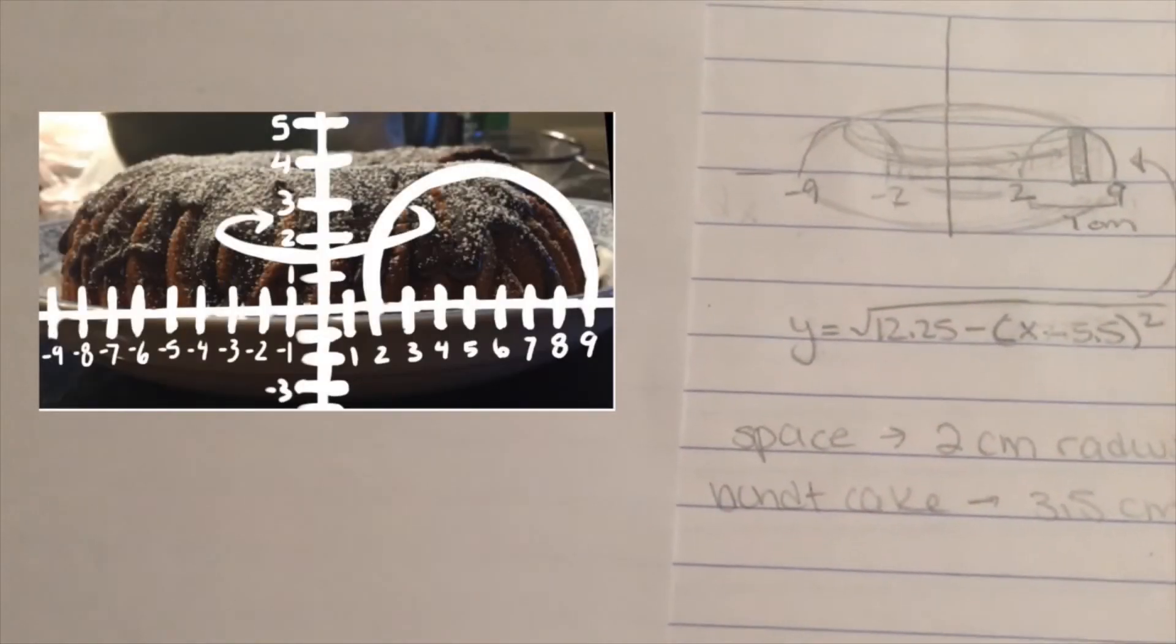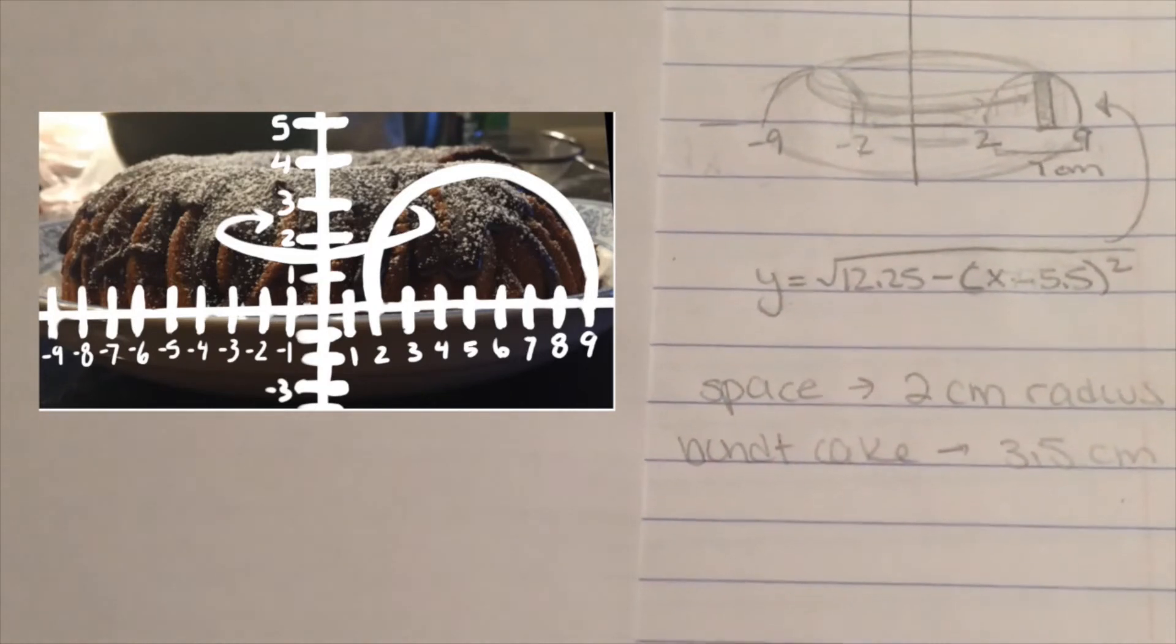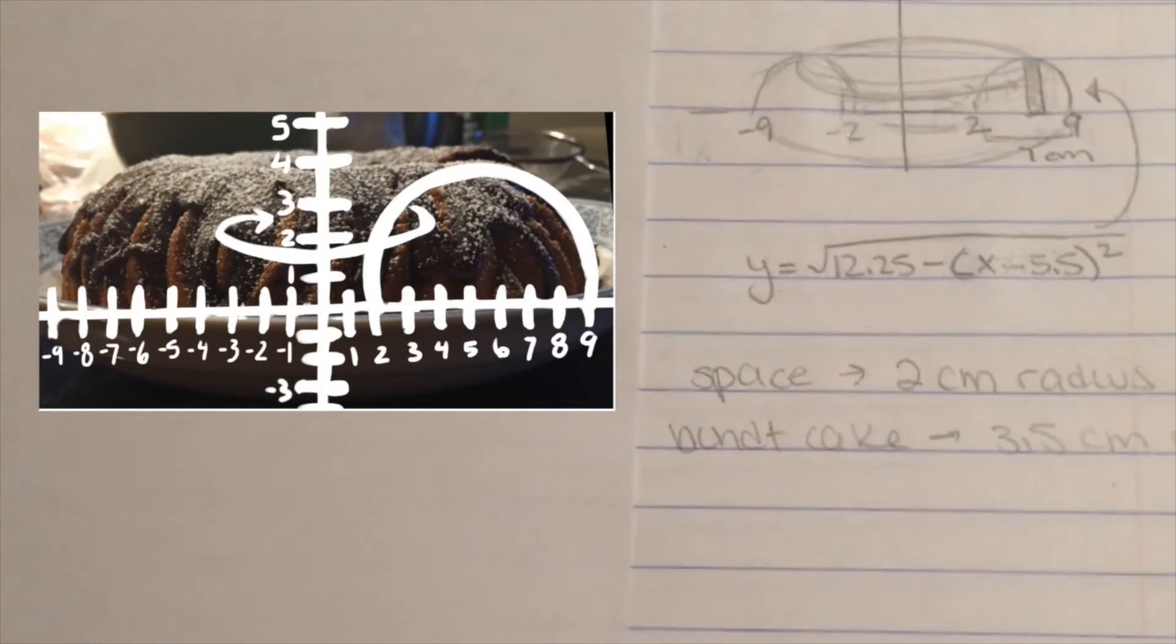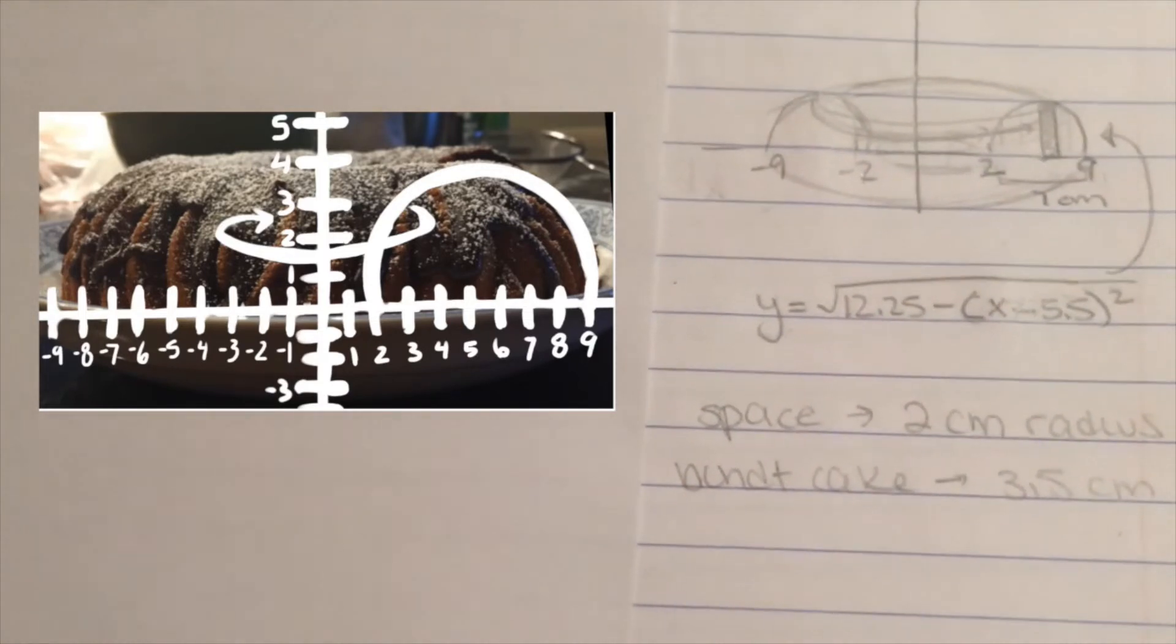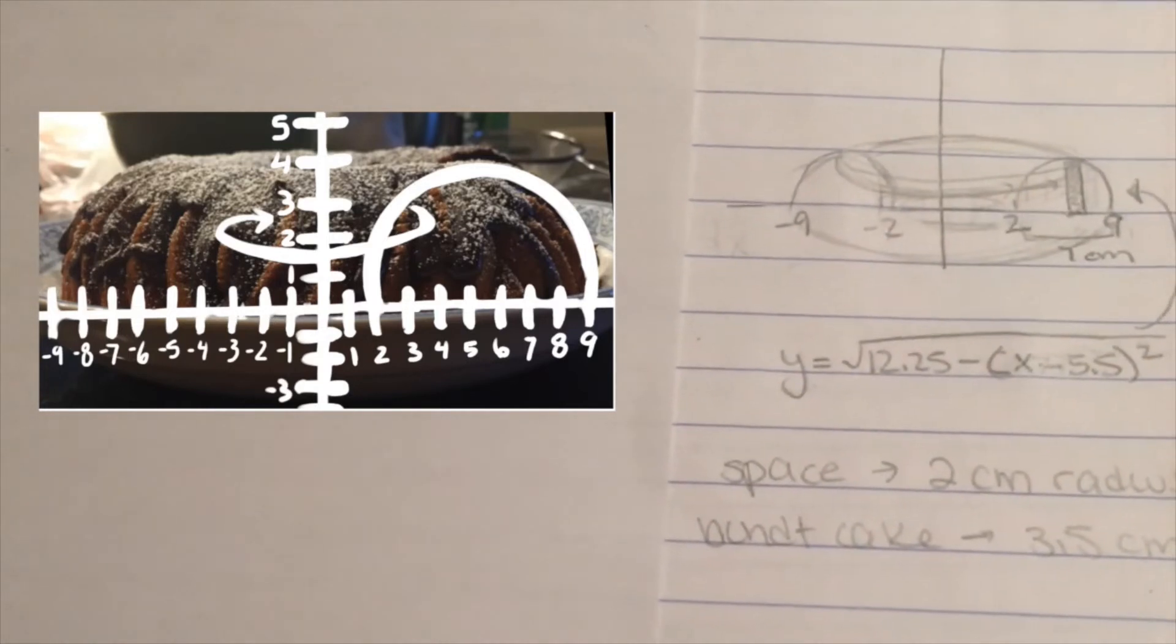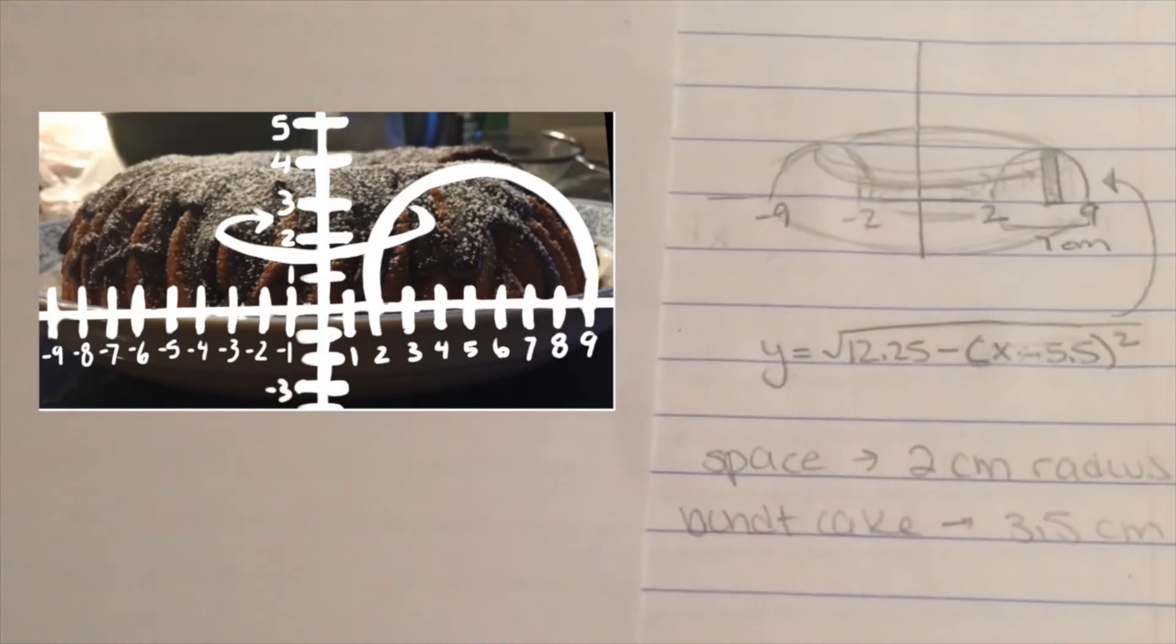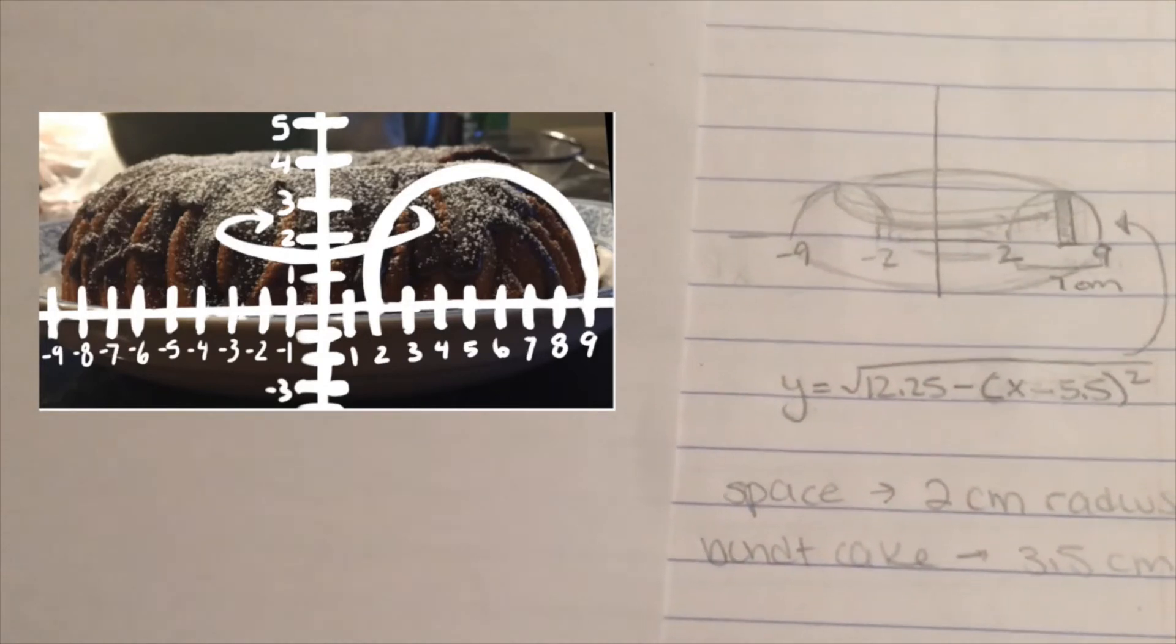To find the volume of the bundt cake, we first need to graph it. To do this, I measured how wide the bundt cake was and what the radius of the space in the bundt cake was, which is 7 cm and 2 cm respectively. Knowing this, we can find that the curve of the bundt cake is y equals the square root of 12.25 minus x minus 5.5 squared. And we can then find the volume using shell method.